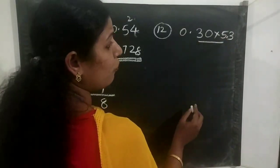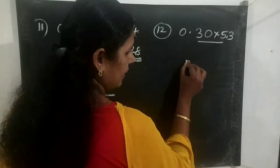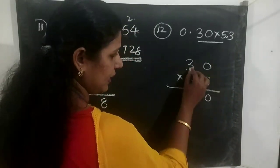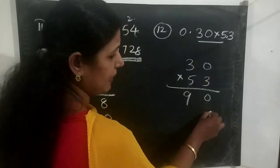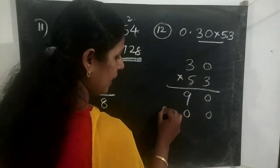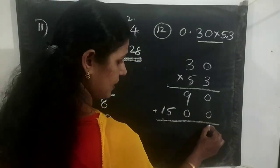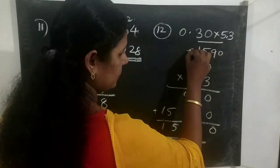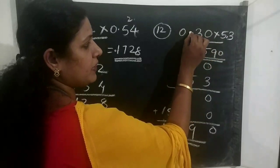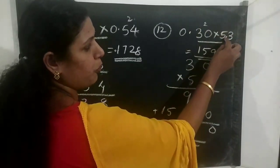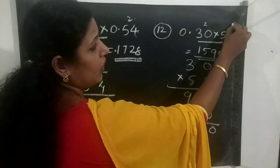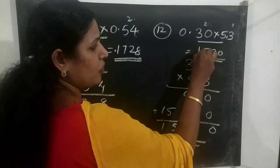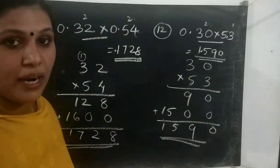Next is 0.30 into 5.3. We multiply 30 into 53: 3 threes are 9; put a 0 on the ones place; 5 zeros are 0; 5 threes are 50. Adding: 0 plus 0 is 0, then 9, then 5, 1. We get 1590. Then count the places — in 0.30 there are 2 places, and in 5.3 there is 1 place. Total: 2 plus 1 equals 3 places. Count 1, 2, 3 from right to left and put the point. The answer is 1.590.